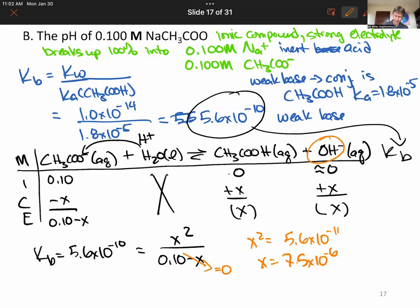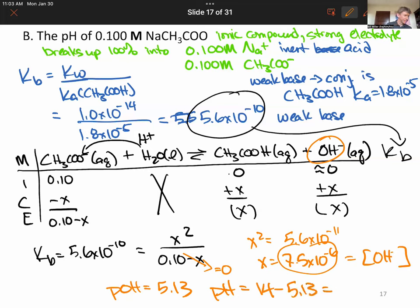And that is our concentration of hydroxide. This is a base. So in order to find your pH, you're going to find pOH first, using our concentration of hydroxide. Take the minus log of my answer. I get 5.13. pOH is minus log of the concentration of hydroxide. pH is 14 minus pOH, and I get 8.87.